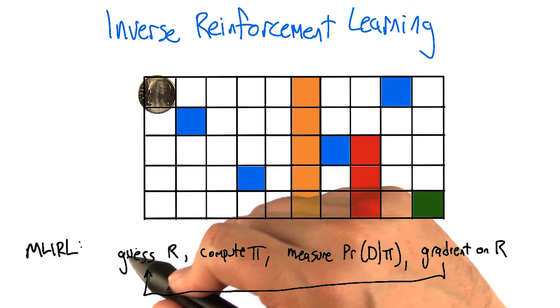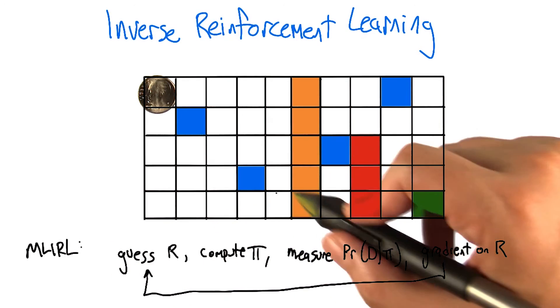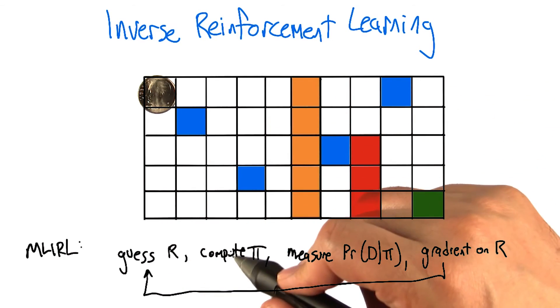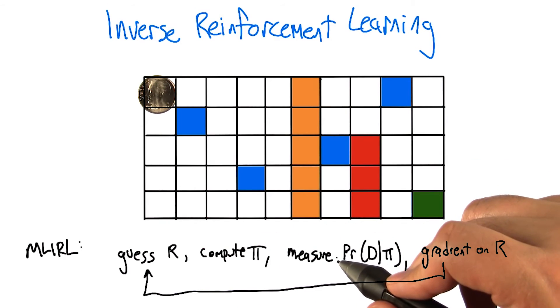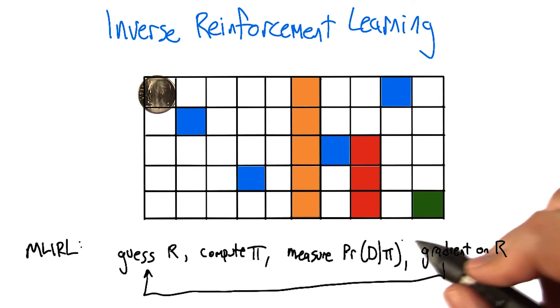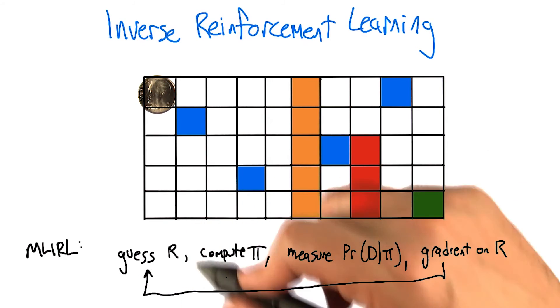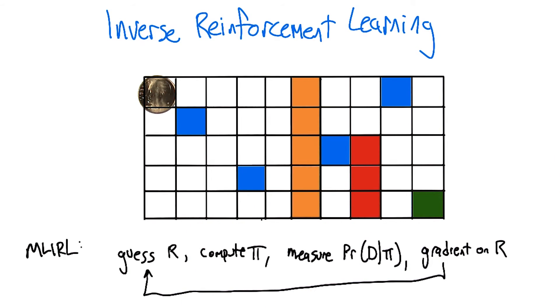And the basic game is here: guess a reward function. In this case we were guessing reward functions that mapped colors to values. We then compute an optimal policy with that reward function in mind, measure the probability of the data of the behavioral trajectories that we saw given that policy, and then compute a gradient on how can the value of the rewards change in a way that would make the data more likely. And then we just go back and do that again until we find something that is a local maximum.